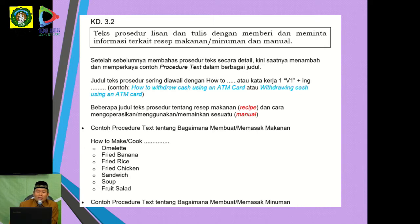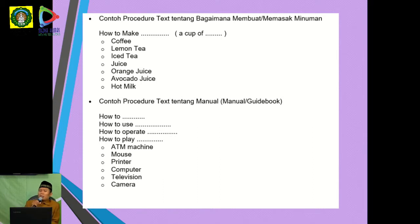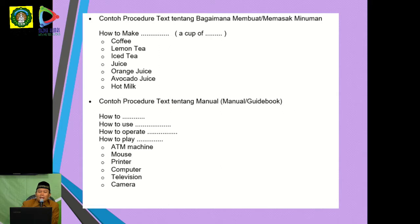Contoh procedure text tentang bagaimana membuat minuman: how to make coffee, how to make a cup of coffee — kalau tambah 'a cup' berarti secangkir. How to make a cup of lemon tea, how to make a glass of iced tea, how to make juice, how to make orange juice, avocado juice, hot milk, dan seterusnya. Ini nanti kita akan praktek membuat salah satu minuman itu — just wait and see.